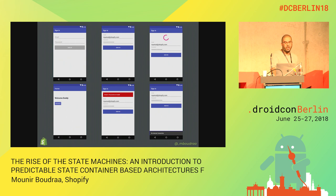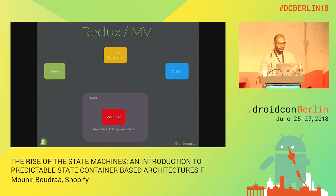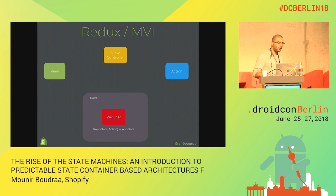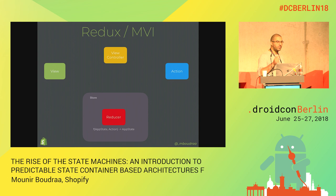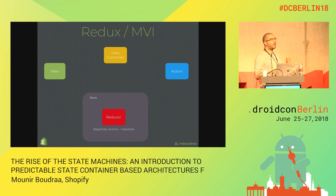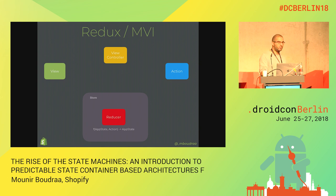The first approach would be to use Redux or MVI. MVI is four components: the view, a view controller (which could be the view model in Arch components), an action - meaning when someone clicks on something - and a reducer, which is responsible for creating a new state. An app is almost always displaying different states, and the reducer is responsible for that.